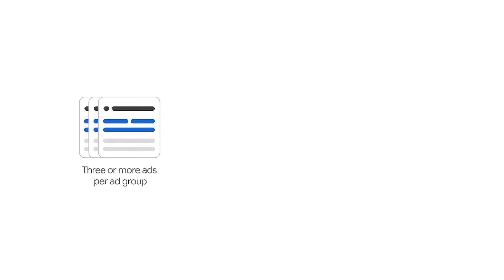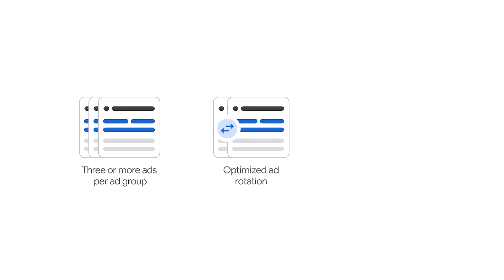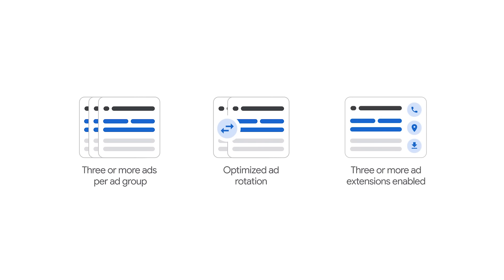Now that you know the basics of text ads, let's review three simple steps you can take to invite people to click on your ad and visit your website. First, adding three or more ads to each ad group. Second, using the optimize ad rotation setting. And third, enabling three or more ad extensions.